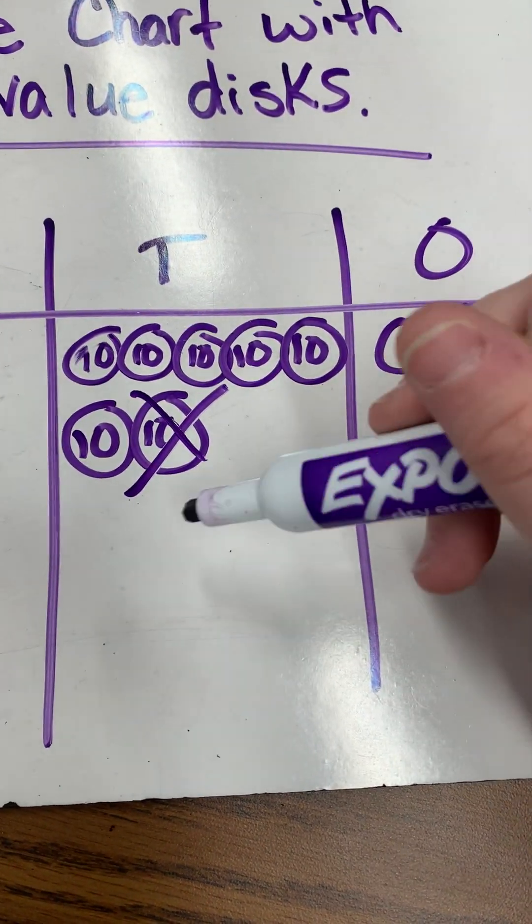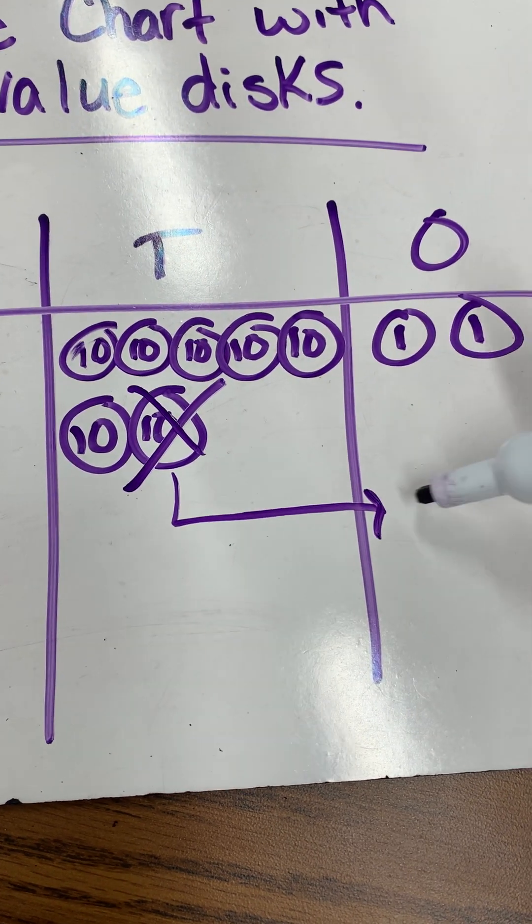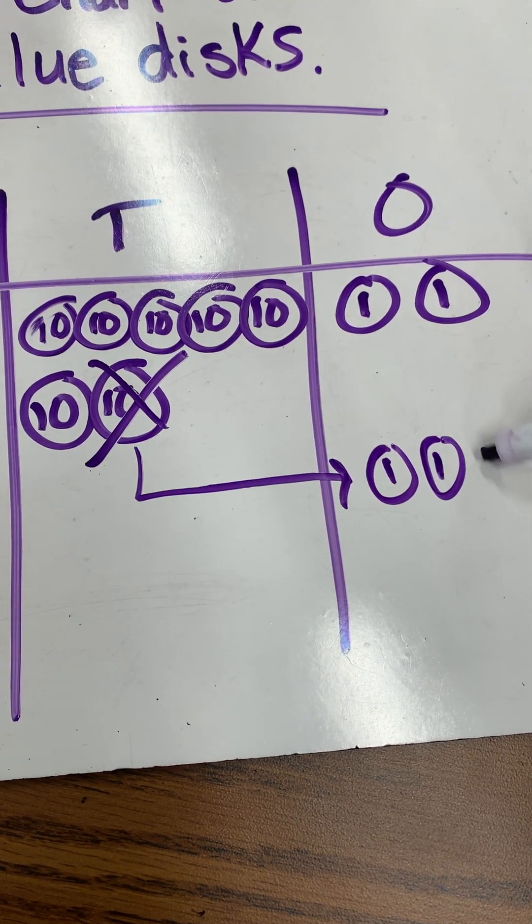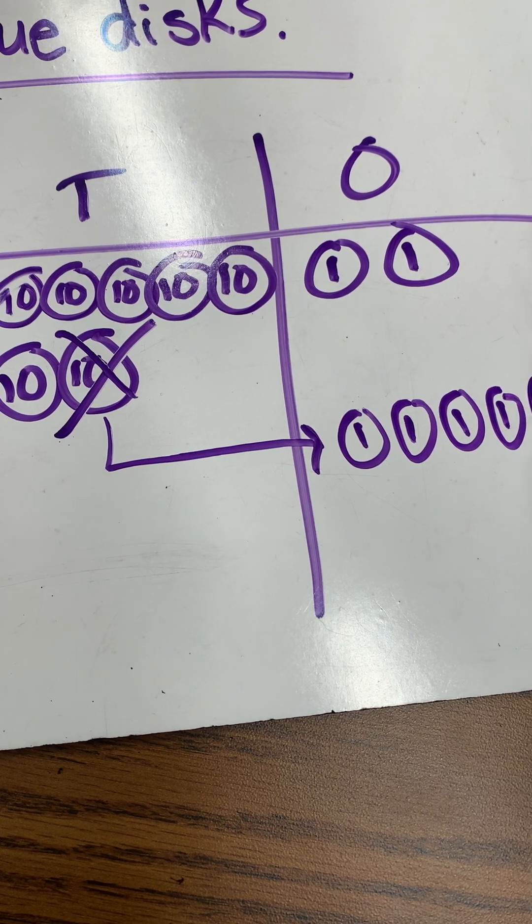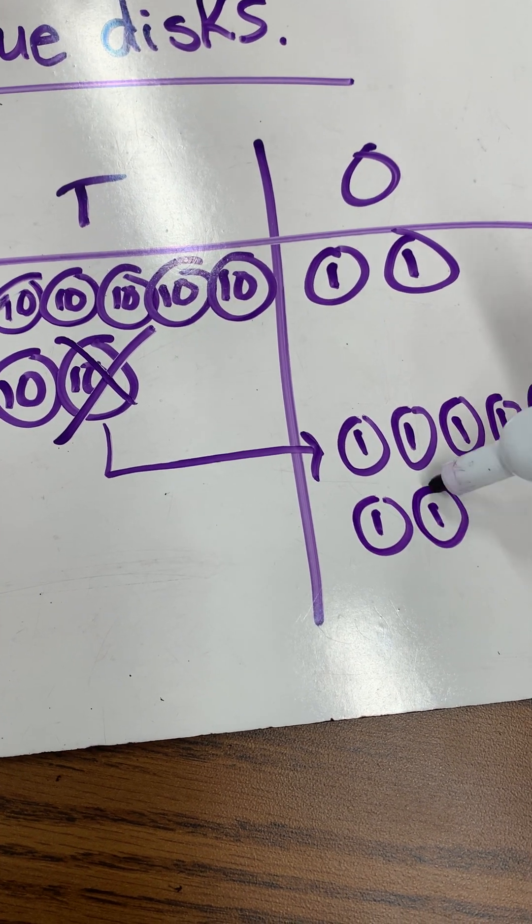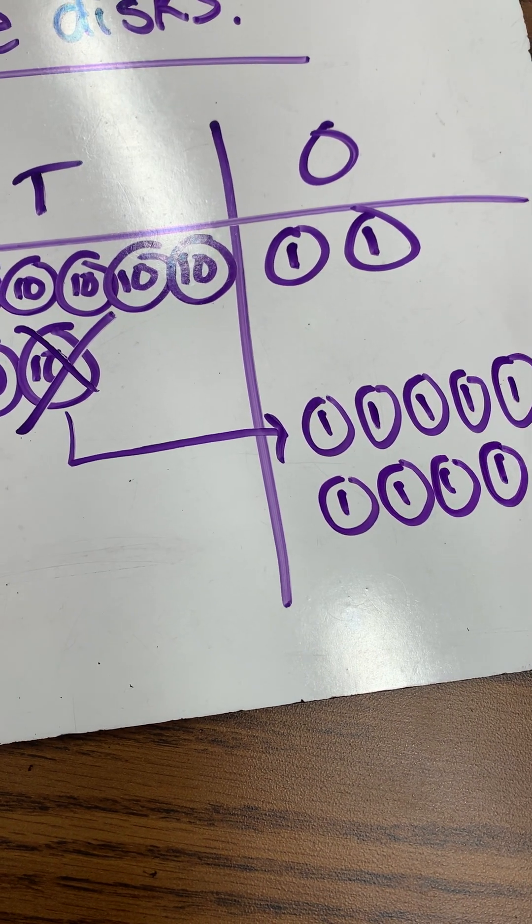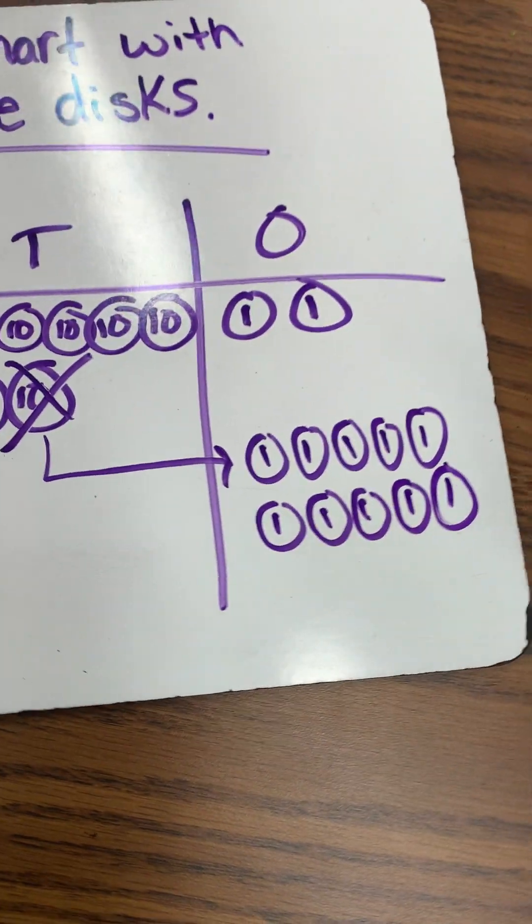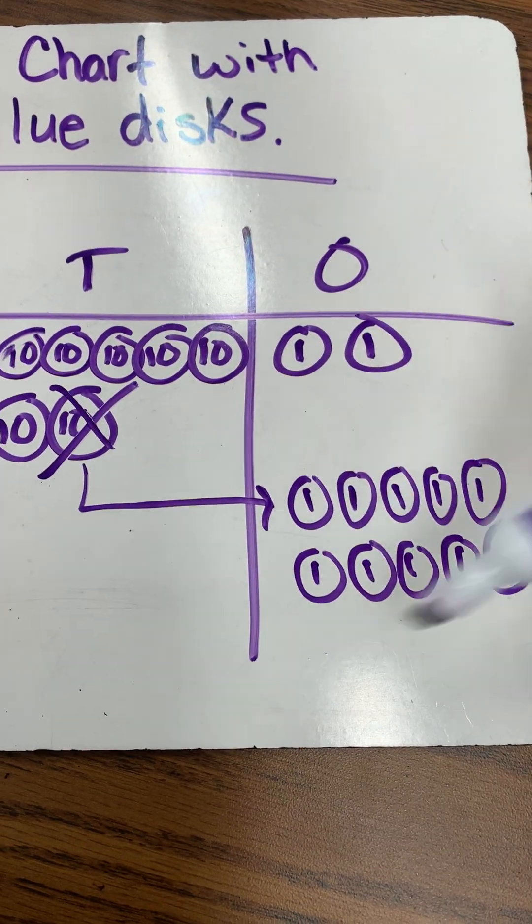So I cross off a 10 and I'm going to put it over here. Now I can definitely subtract the 9s because I have enough here.